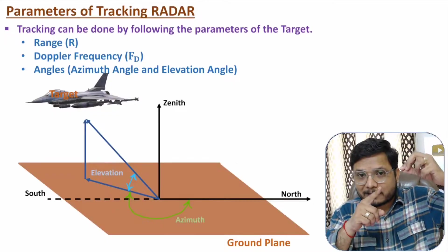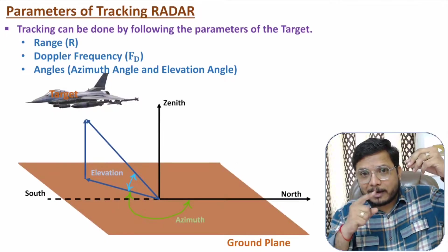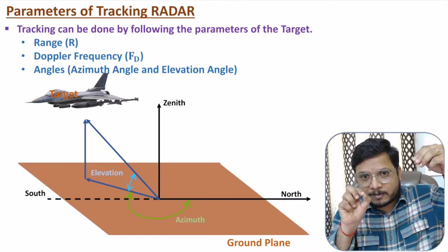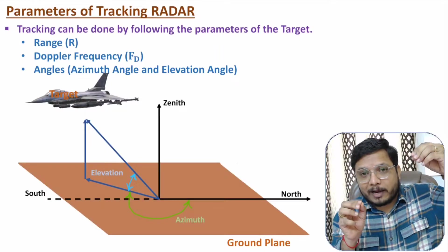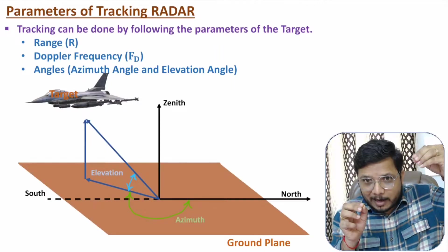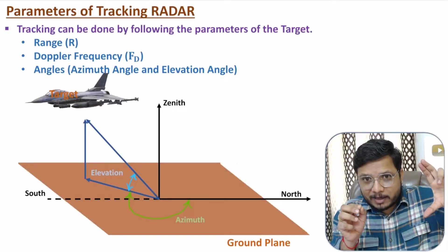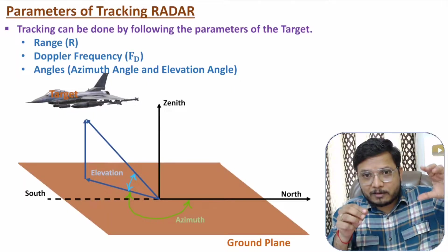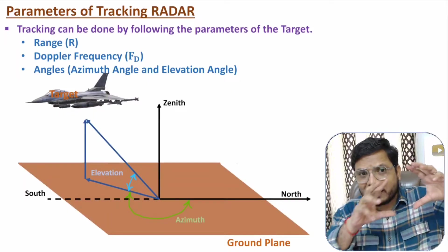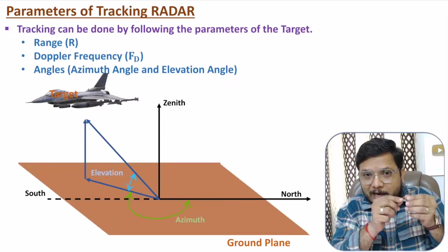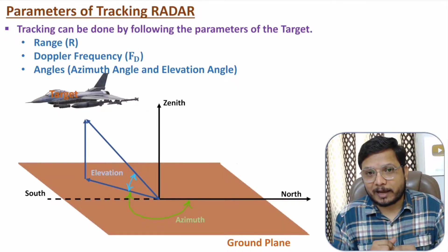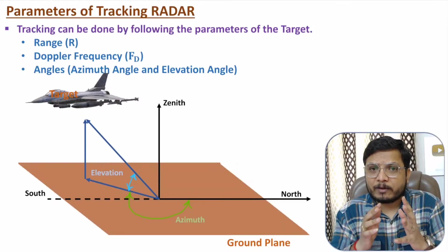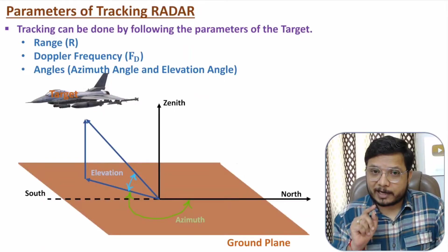With a radar here and a target there: the line from radar to target explains the range. The angle from target down to the ground and back to the radar is the elevation angle, and the angle from the ground towards north is the azimuth angle. Based on azimuth angle and elevation angle, radar can identify the direction of the target.